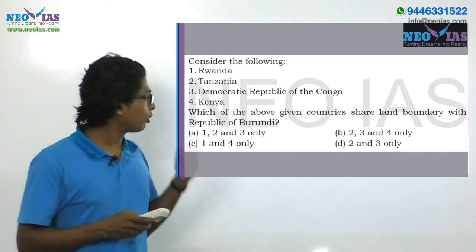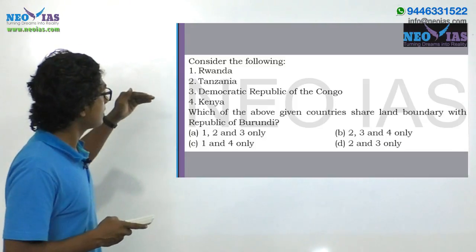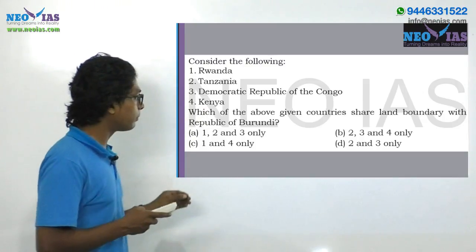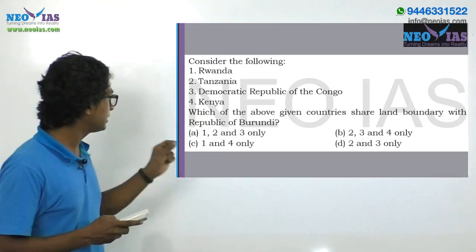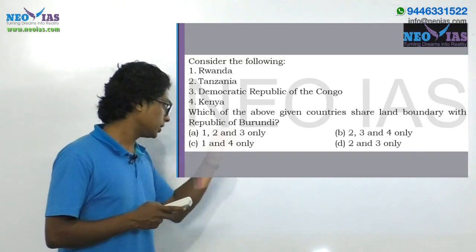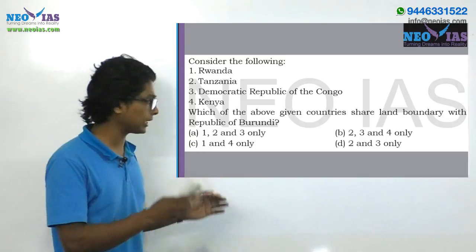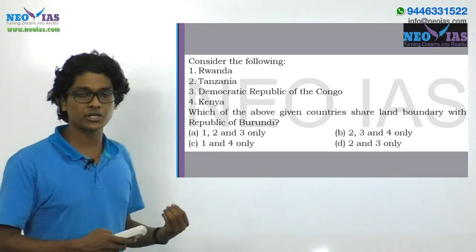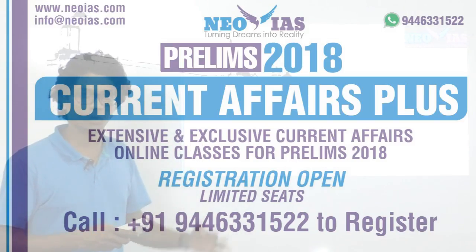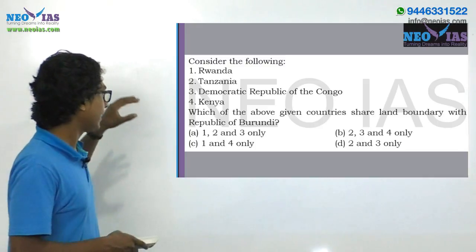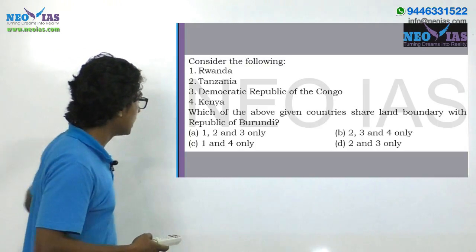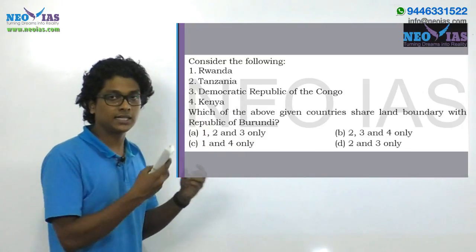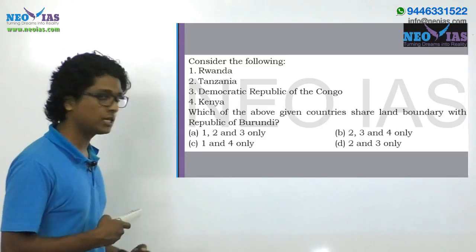Another map-based model question. Consider the following four countries given — the question is: which of the above given countries share a land boundary with the Republic of Burundi? This question is a current affairs related question. It is very important that the Republic of Burundi is recently in the news as the first nation to come out of the International Criminal Court. Due to that reason, you can expect questions related to the Republic of Burundi, and the most probable question is about the land boundary shared by Burundi.